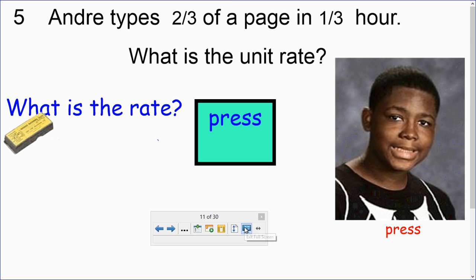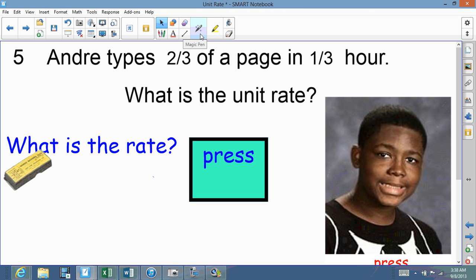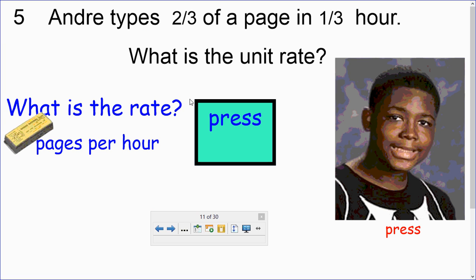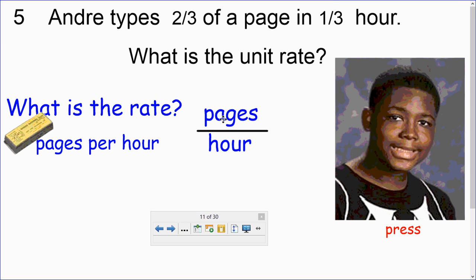Well, first we have to find out what the rate is. Well, rate is when you are comparing two numbers or two things together. So, we're comparing what? Pages to the hours. So, we compare pages to the hour. So, we can compare Andre's two-thirds of a page to one-third of an hour. So, we can make it a fraction. He types two-thirds of a page to one hour. So, our top would be two-thirds on our numerator, and our denominator would be one-third. We have fractions on top of fractions. Those are called complex fractions.